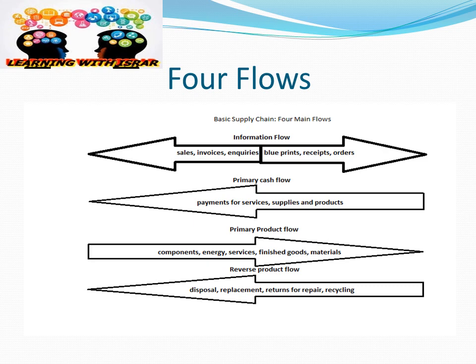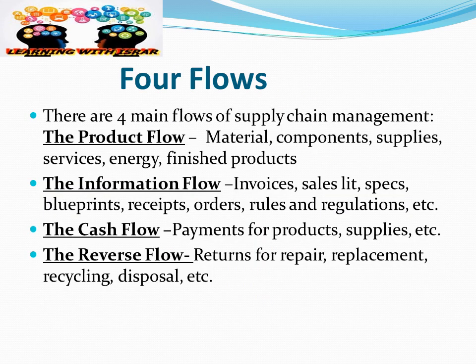This picture tells you the direction of the flows. The four flows of supply chain management are: first, product flow — it contains materials, components, supplies, services, energy, and finished products; second, information flow — it includes invoices, sales literature, specs, blueprints, receipts, order rules and regulations; third, cash flow — payment for products and supplies; and fourth, reverse flow — the return, repair, replacement, recycling, and disposal of items.